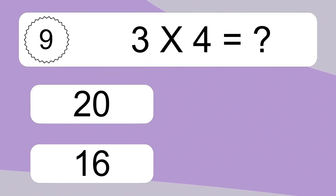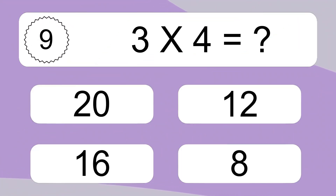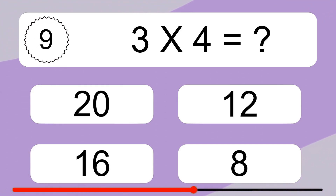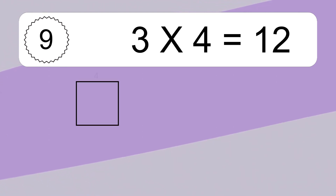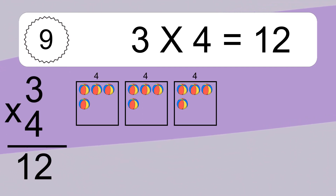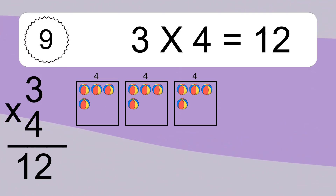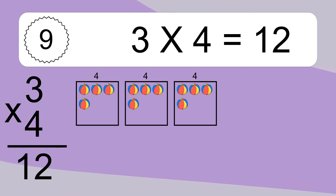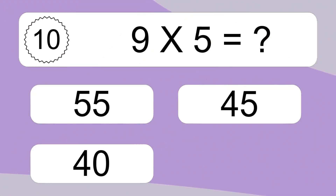6 times 4 equals what? 6 times 4 equals 24. We have 3 boxes, and each box has 4 colorful balls inside. If you count all the balls in all the boxes together, you will have 3 times 4 balls. This equals 12 balls.